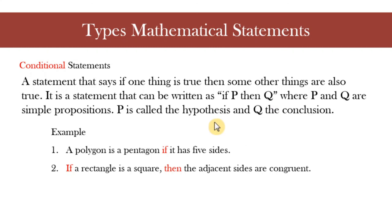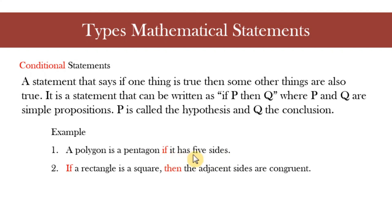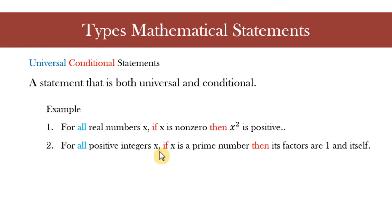The third type is called a conditional statement, written in the form 'if p, then q.' It says that if one thing is true, then some other thing is also true. P is called the hypothesis and q is called the conclusion. For example: a polygon is a pentagon if it has five sides — equivalently, if a polygon has five sides, then it is a pentagon. Another example: if a rectangle is a square, then the adjacent sides are congruent.